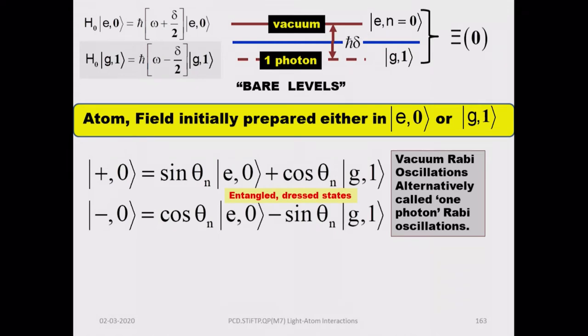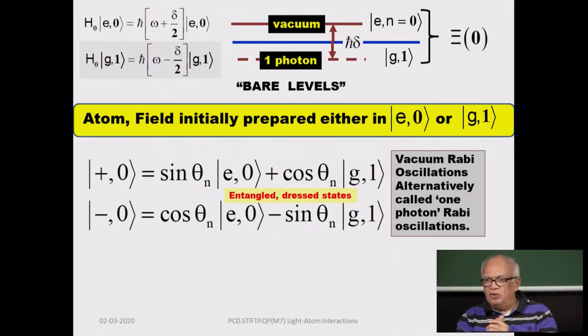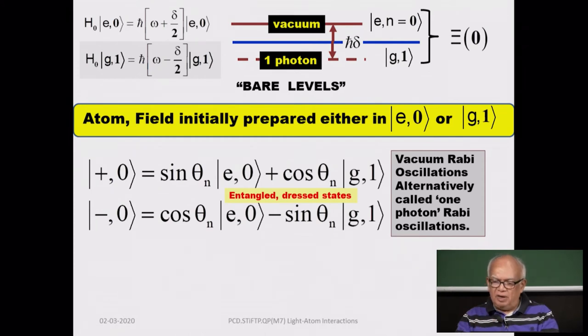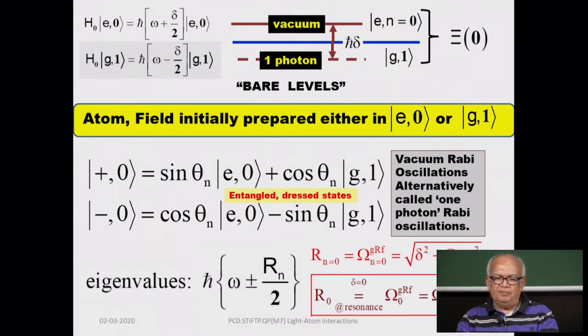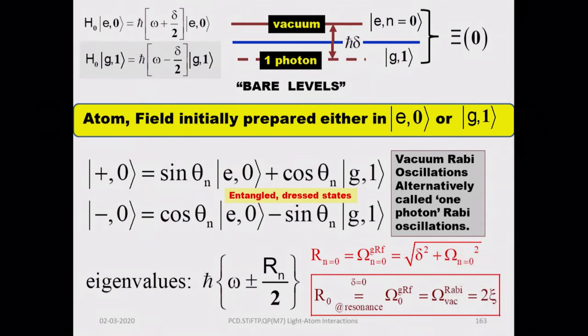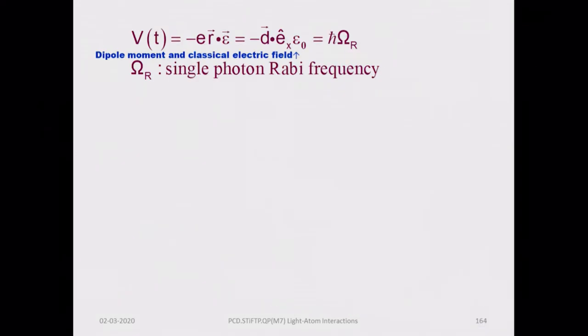These oscillations are called vacuum Rabi oscillations or one-photon Rabi oscillations. The terminology depends on the initial state: if it is |E,0⟩, you call them vacuum Rabi oscillations; if it is |G,1⟩, one-photon Rabi oscillations. It is the same physics, and we know what the eigenvalues are.